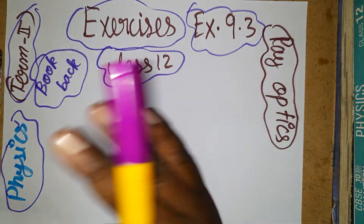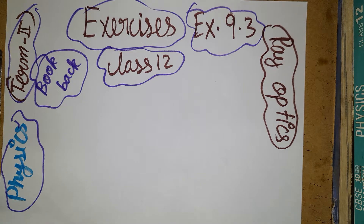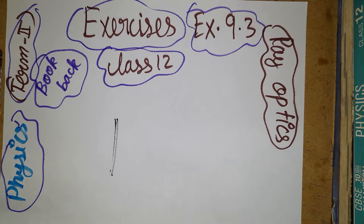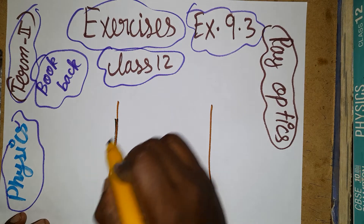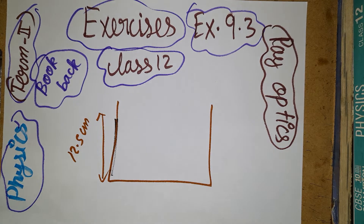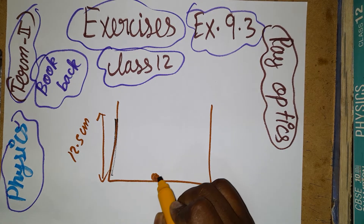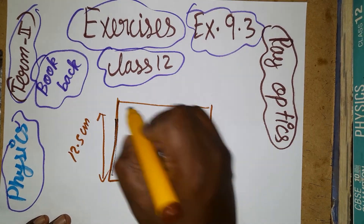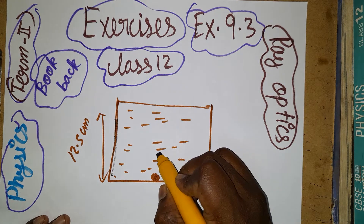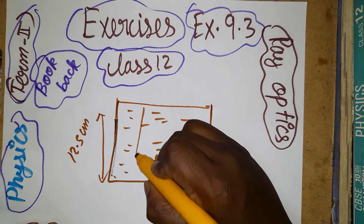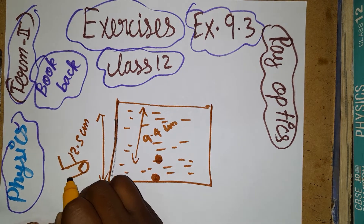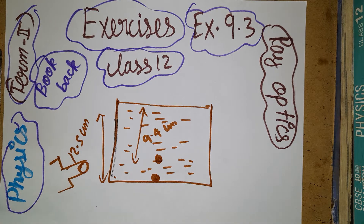There are two cases. In Case 1, we have a container with a height of 12.5 centimeters — that is the real depth. Inside, we fill it fully with water, and a coin is placed at the bottom. Due to refraction, the coin appears to rise, so the apparent depth is given as 9.4 centimeters. From outside, we use a microscope to observe this. We need to find the refractive index of the liquid.